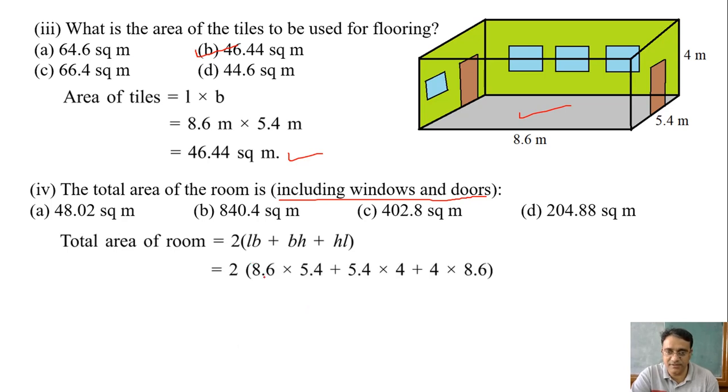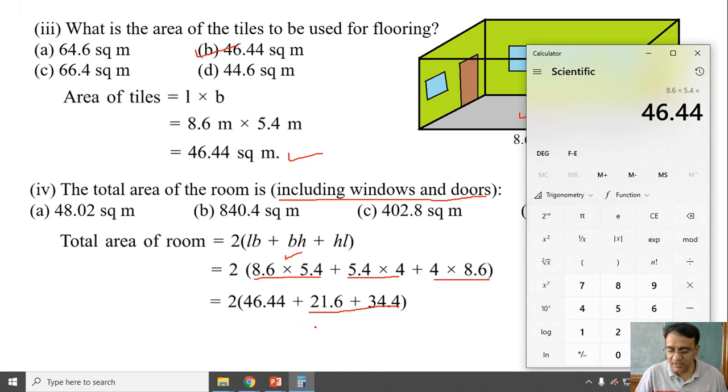So now we will substitute all the values. So 2, add karna hai. So if we already multiply kar chuke 46.44, you have to multiply. This also you will get 21.6, 34.4. Now adding these two will get 56.56. So if you add all, 56 plus 46.44 into 2.